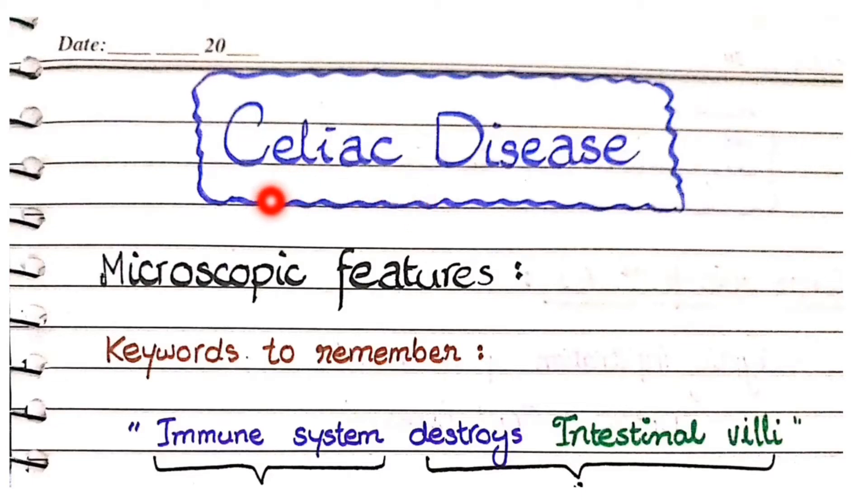In this video we will discuss the pathological features of celiac disease. For microscopic features of celiac disease, the keywords to remember are: immune system destroys intestinal villi. Celiac disease is an autoimmune disorder in which our immune system destroys the cells of intestinal villi.